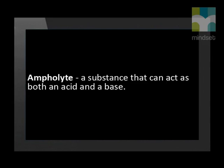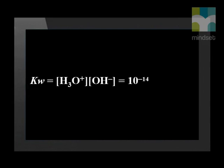Let us consider the ionization of water, called auto-ionization or self-ionization. Water ionizes in water — this explains why water is an ampholyte, a substance which acts as both an acid and a base. The ionization constant of water is given as Kw equal to the concentration of the hydronium ion multiplied by the concentration of the hydroxyl ion. The value of Kw is 10 to the exponent negative 14.